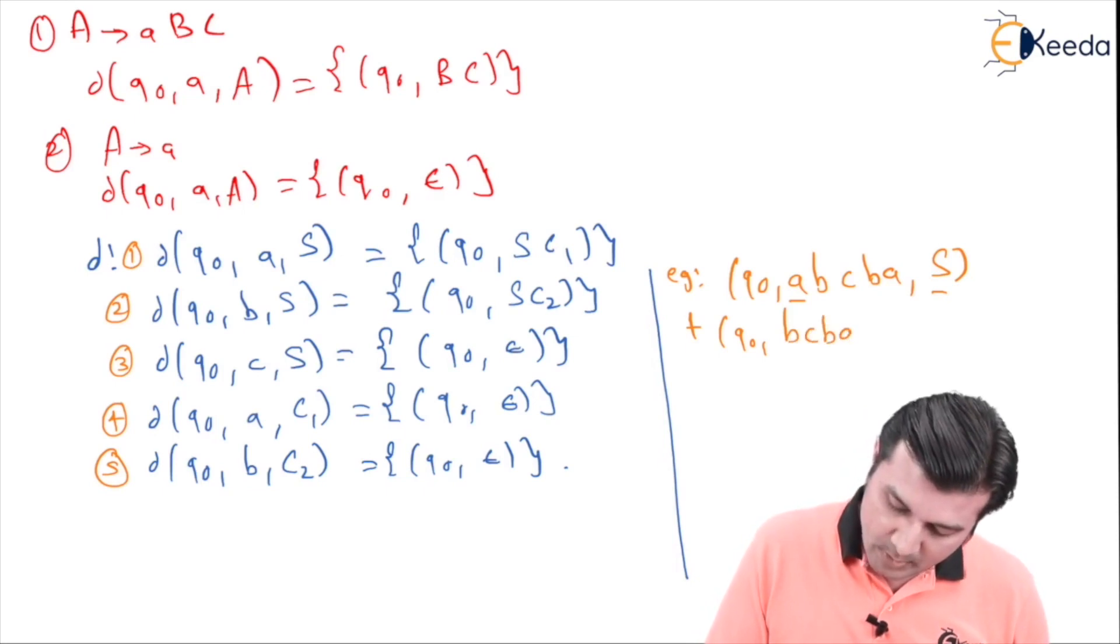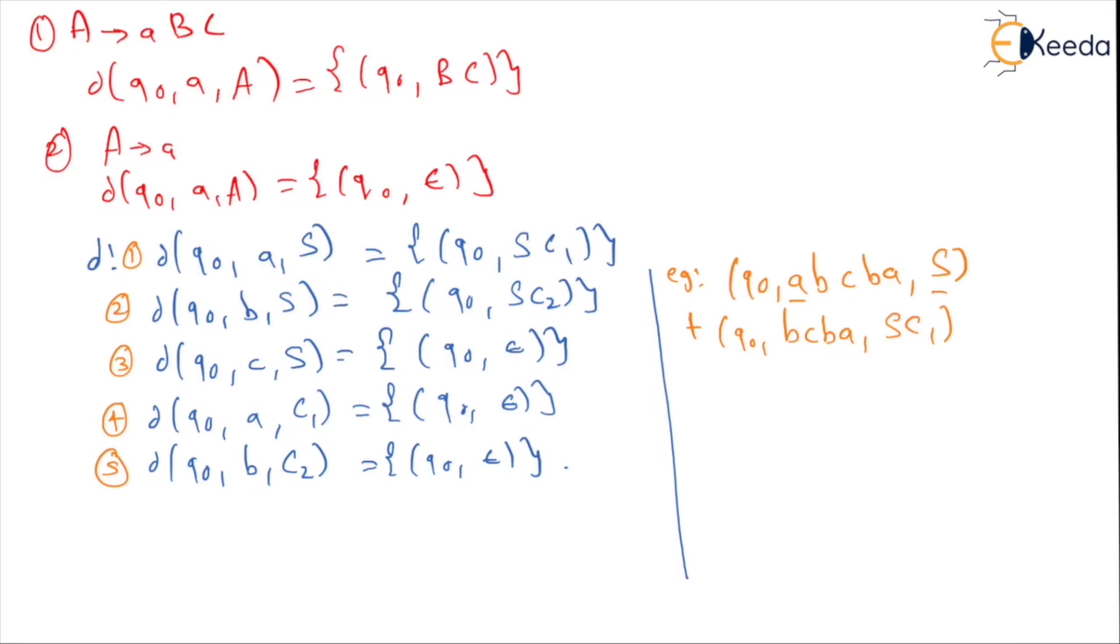So q0 on a when the stack top is S, let me label the numbers one, two, three, four, and five. So q0 on a when the stack top is S, using rule one I say go to q0, what remains is b c b a, and we say we are going to push over this S becomes SC1.